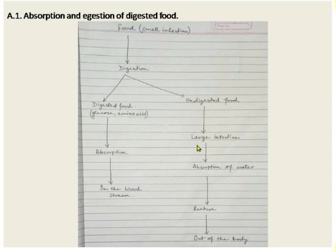Undigested food goes to the large intestine. In the large intestine, water from the undigested food is absorbed. Then the rest of the food is stored in the rectum, and this undigested food is thrown out of the body at regular intervals of time.